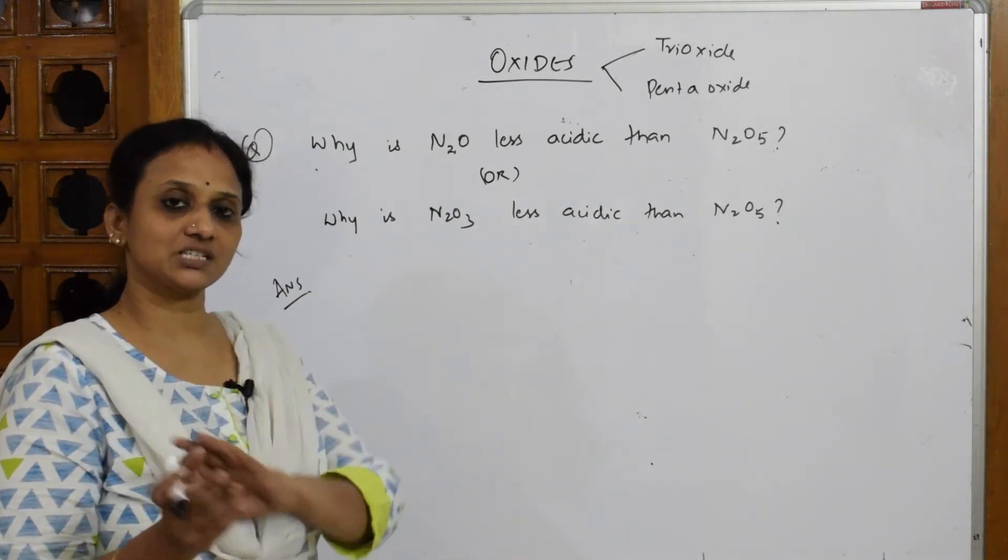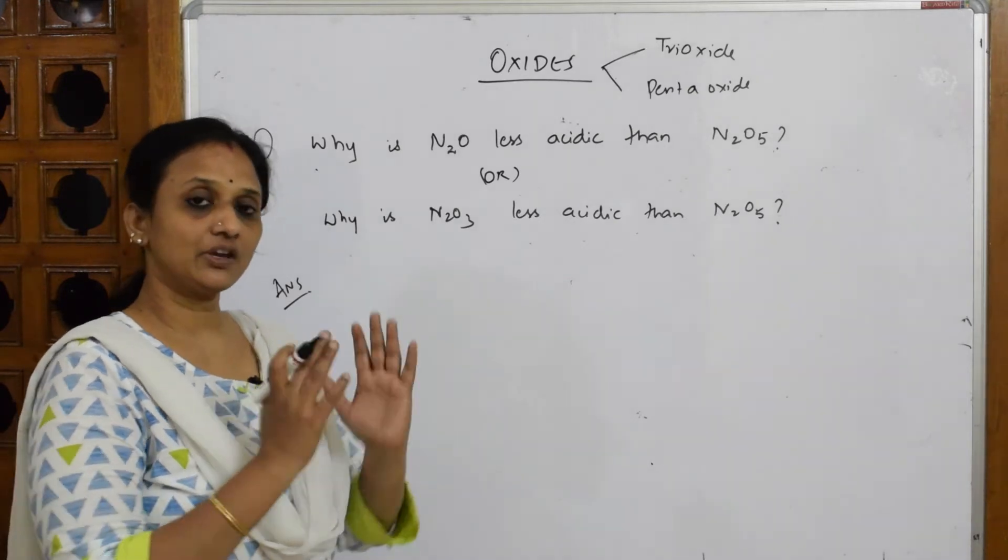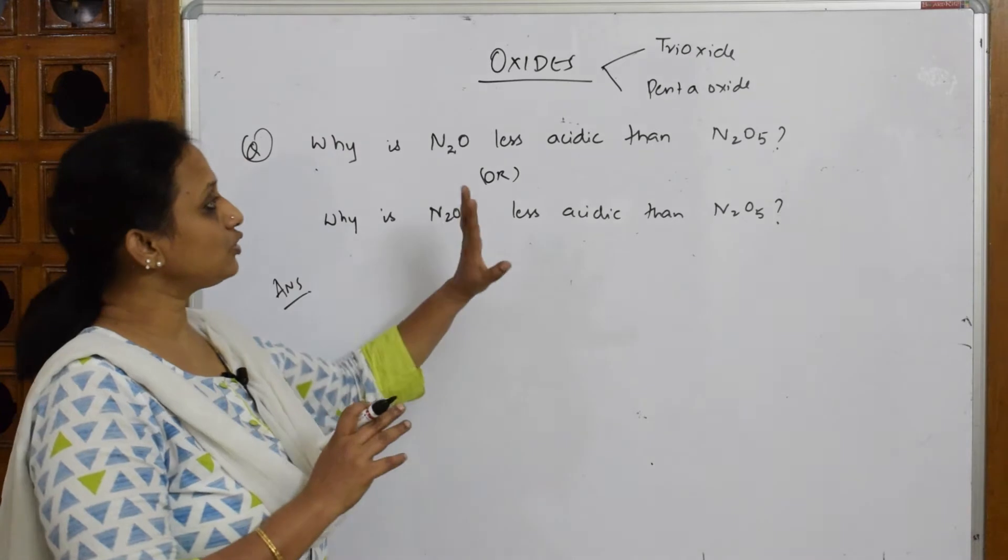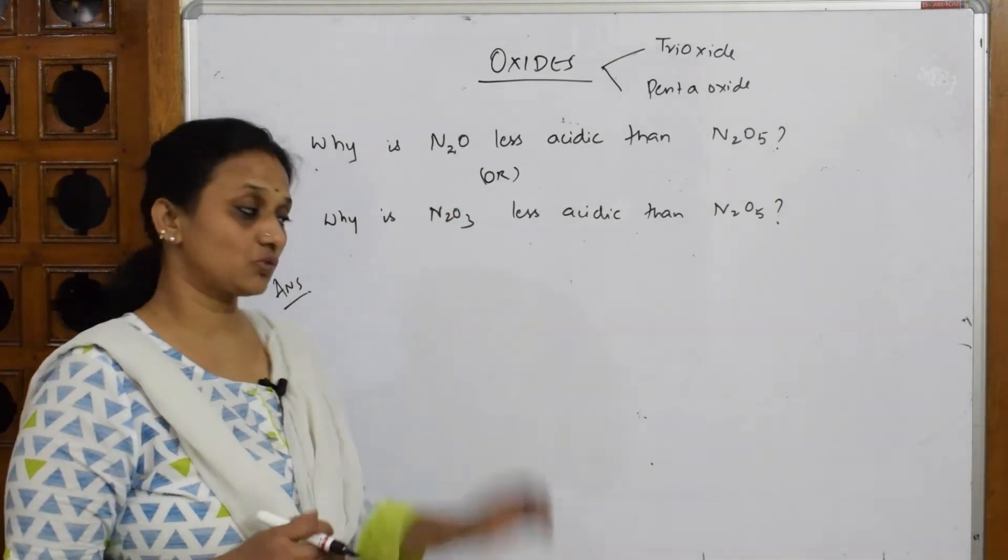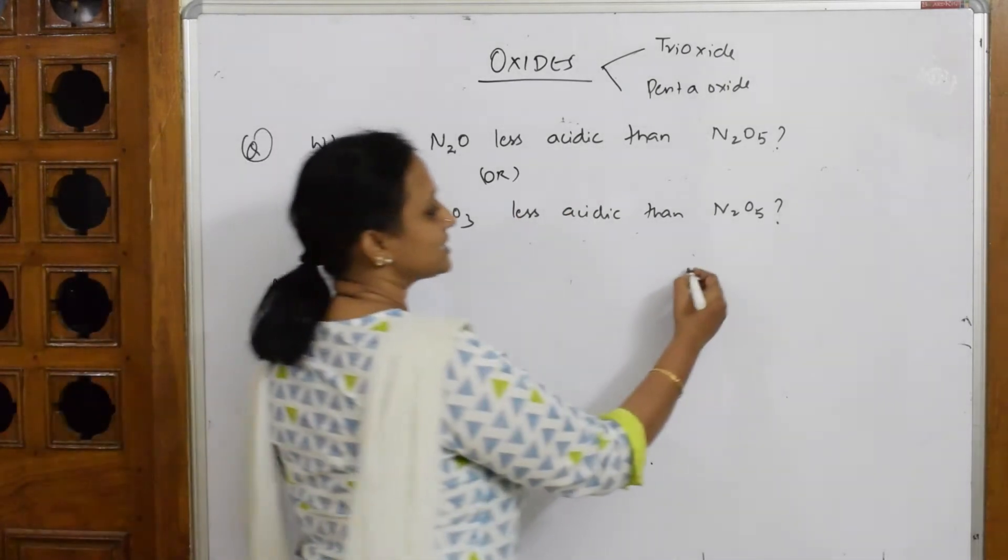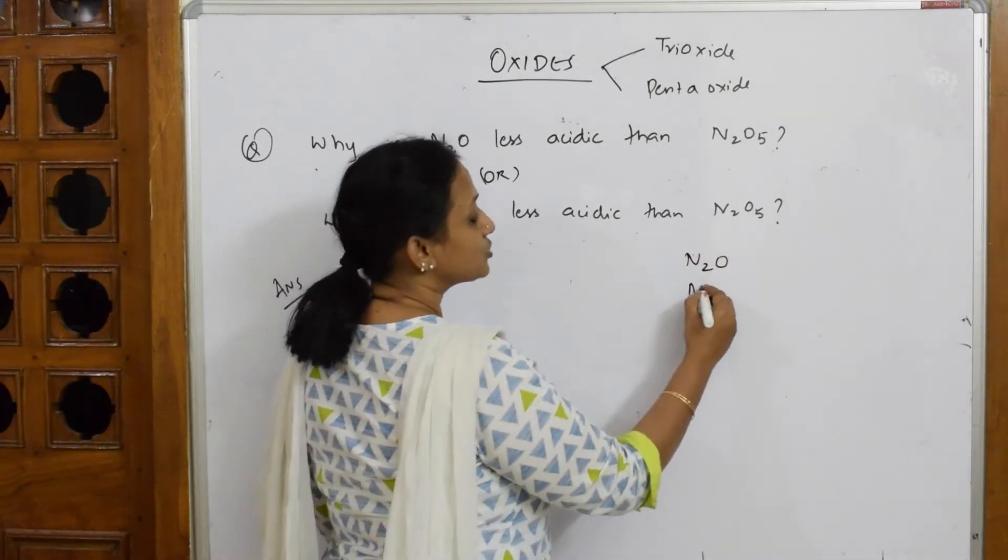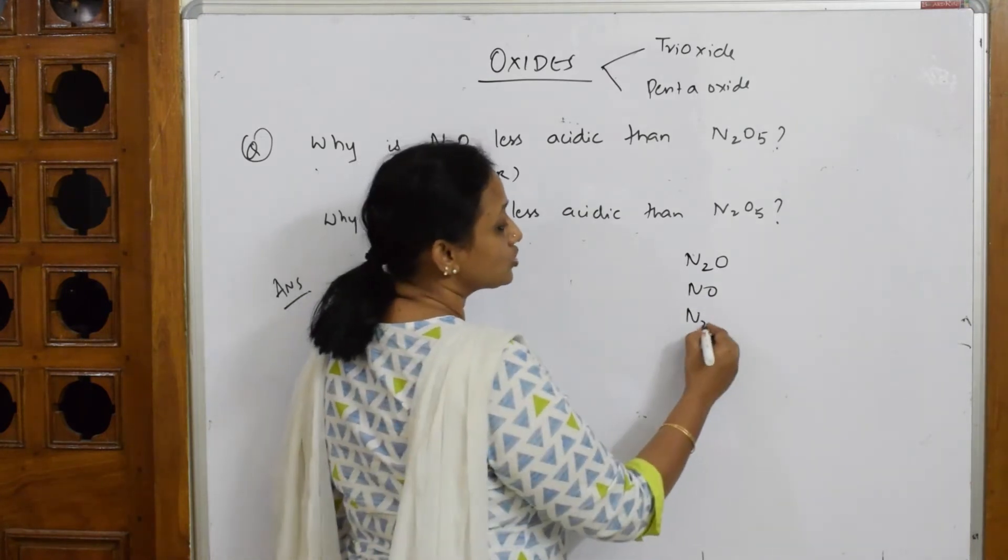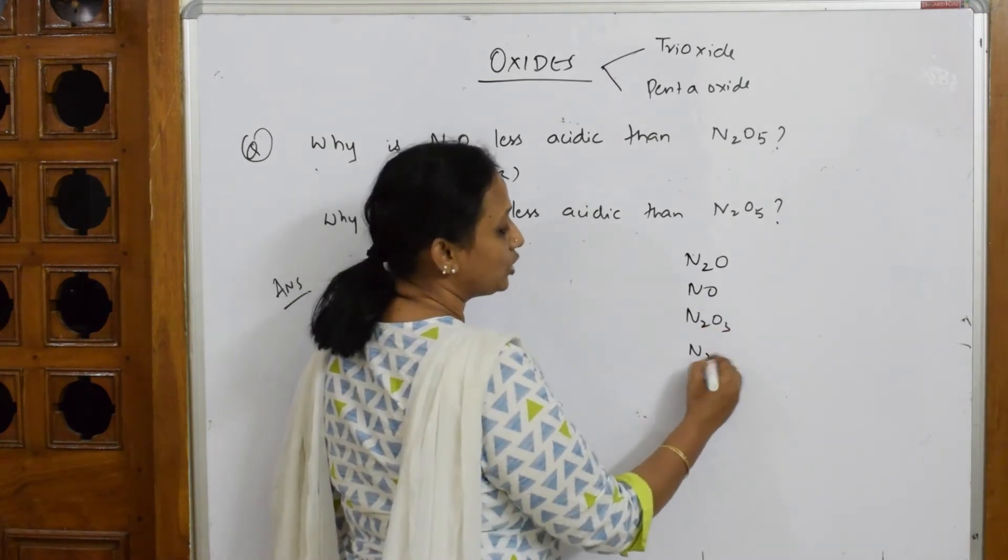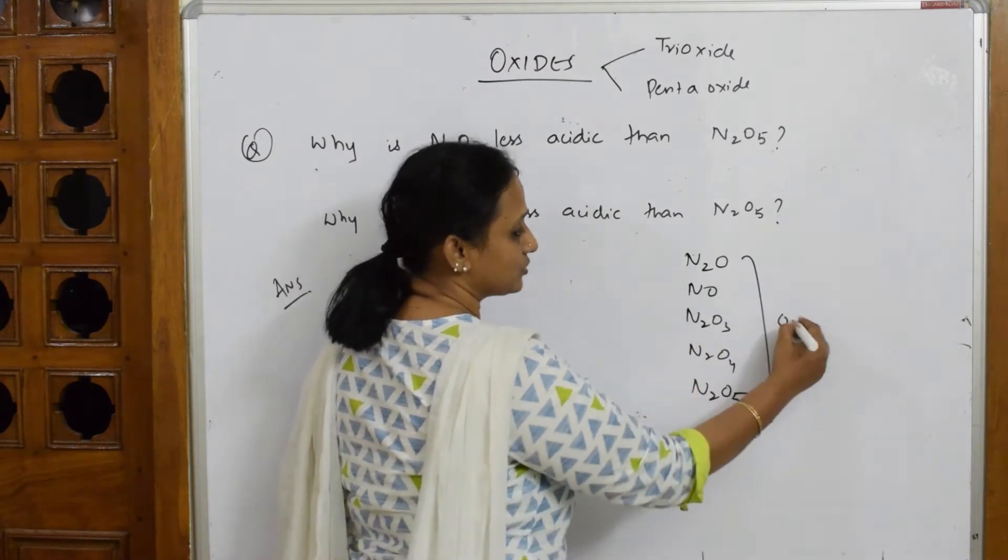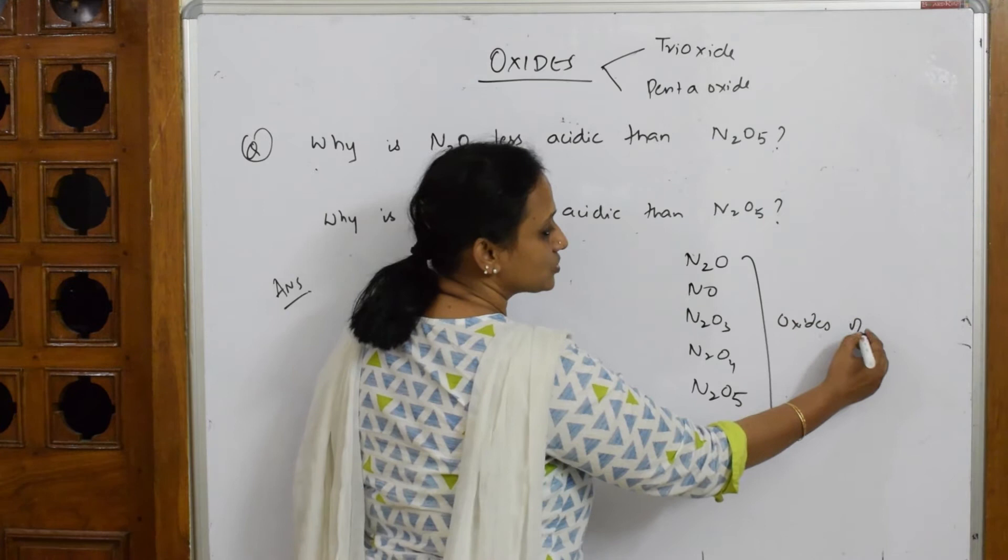Suppose if they give you oxides of only nitrogen, what type of oxides does nitrogen form? Nitrogen is going to show oxides like N2O, NO, NO2, but it will also show oxides like N2O3, N2O4, N2O5. All these are oxides of nitrogen. We'll be drawing the structures also, right?